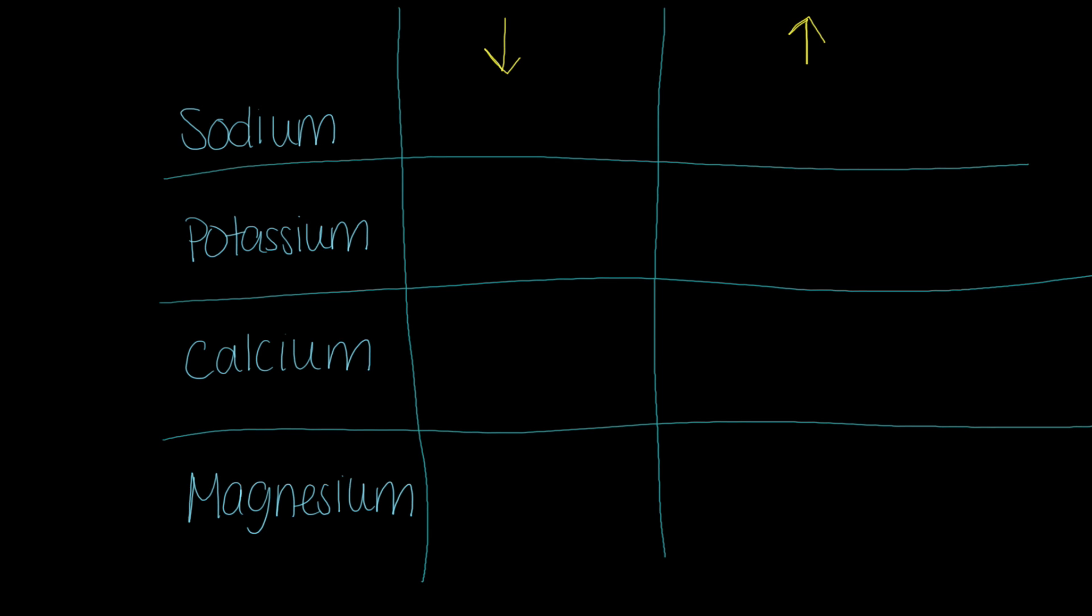One of the things that most students get confused about is that there's so many electrolytes. How am I going to remember every single sign and symptom when it's too high or too low? As a starting point, I'm going to use these four electrolytes that are really the popular ones we talk about in nursing education: sodium, potassium, calcium, and magnesium.